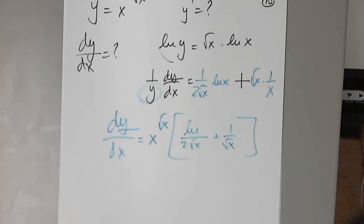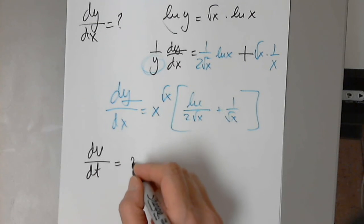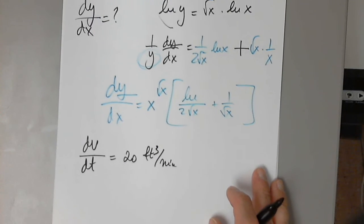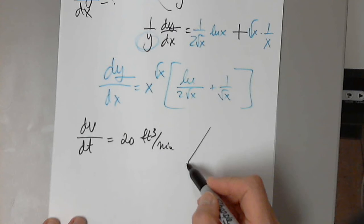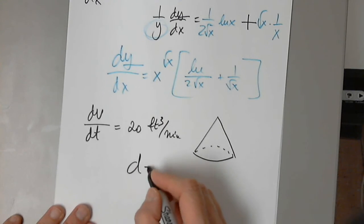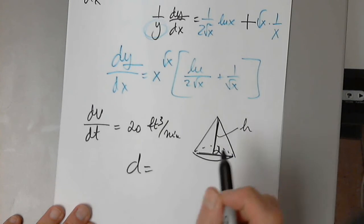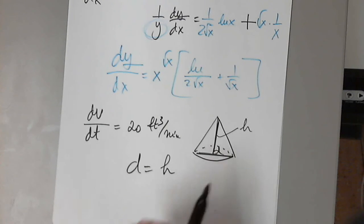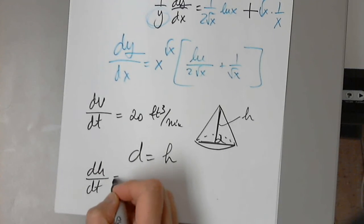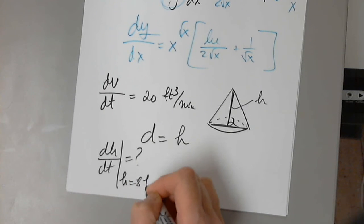So here we had dv over dt, which is 20 cubic feet per minute. And the pile is in the form of a cone, and we are told that the diameter and the height are always equal. How fast is the height of the pile — so dh over dt — this is what we're asked to determine, when the height is 8 feet?